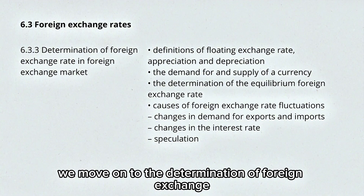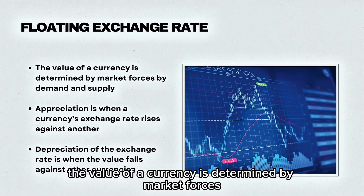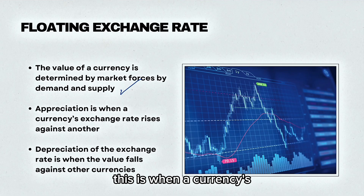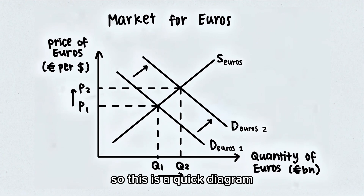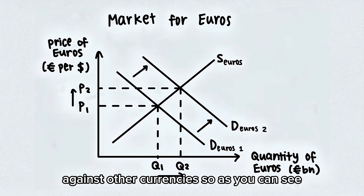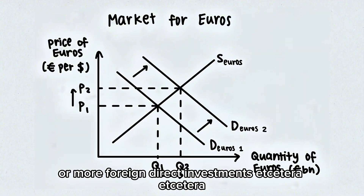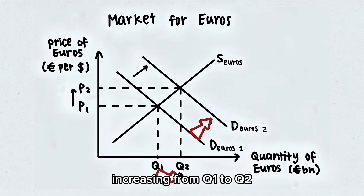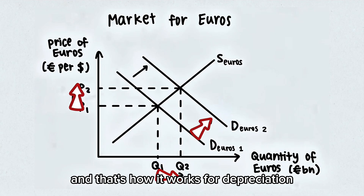Now we move on to the determination of foreign exchange rates in foreign exchange markets. In a floating exchange rate, the value of a currency is determined by market forces — demand and supply. When a currency appreciates, its exchange rate rises against another; if it depreciates, its value against another currency falls. This diagram illustrates the appreciation of the euro: when demand for euros increases due to additional exports or more foreign direct investment, demand shifts from D-euro 1 to D-euro 2, increasing quantity from Q1 to Q2 and the price appreciates from P1 to P2. For depreciation, just do it the other way around.